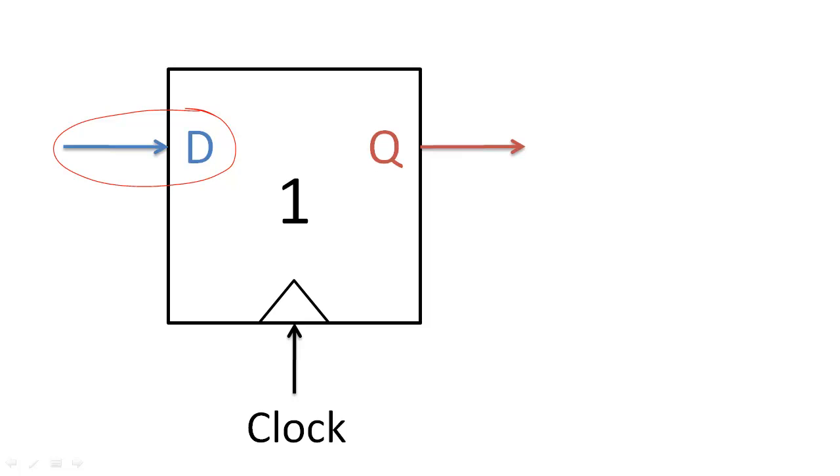The flip-flops in this example are called D flip-flops. If the input to a D flip-flop is 0 during the rising edge of the clock, then the flip-flop will store a 0 until the next rising edge. If the input to a flip-flop is a 1 during the rising edge of the clock, then the flip-flop will store a 1 until the next rising edge.